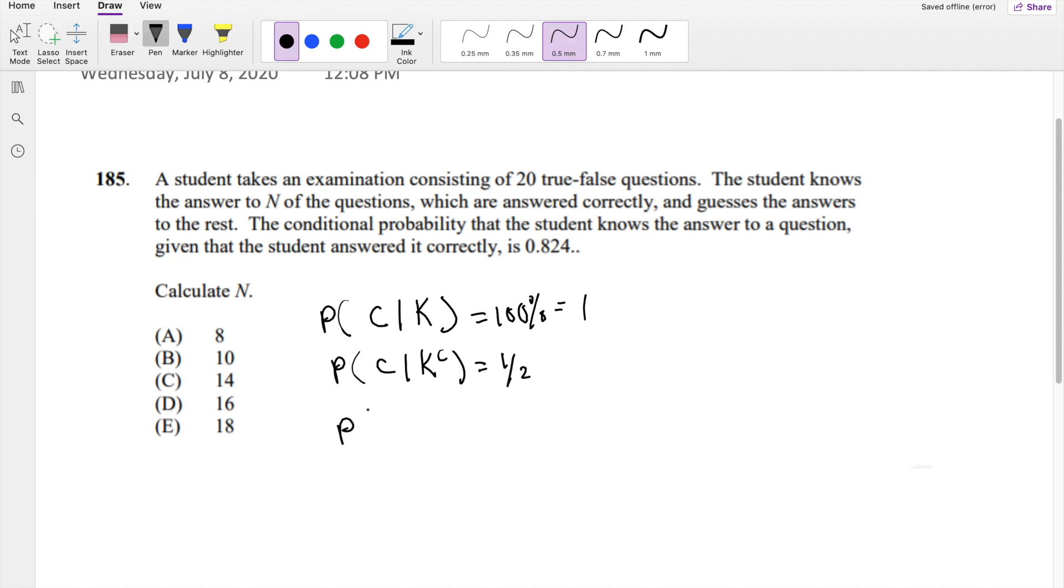And what's the probability that they know it? Well, that's equal to N out of 20. The probability that they know the question is N out of 20. And the probability that they don't know the question is equal to 20 minus N over 20.